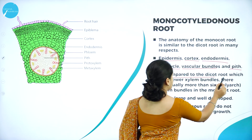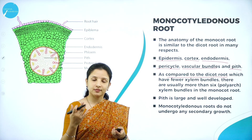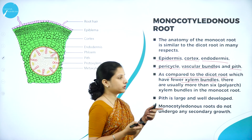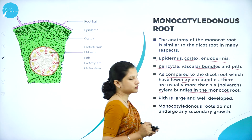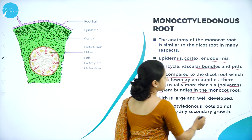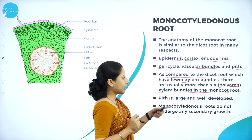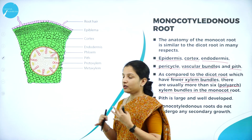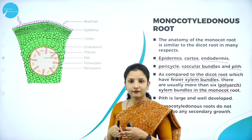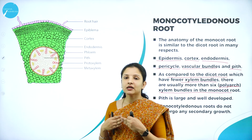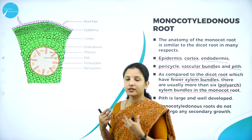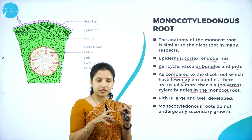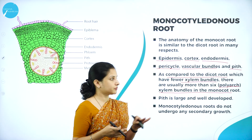In the dicotyledonous root, the xylem is either two or four, and the phloem is also either two or four. But in the monocotyledonous root, there are usually more than six xylem patches — called the polyarch condition. Another major difference is the pith: in the monocot root, the pith is very large and well developed because the more numerous vascular bundles create more space inside the stele. In contrast, the pith in the dicot root was very small and inconspicuous or negligible.